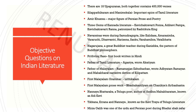नवरतना, Samudragupta के time पर — Gupta period हमारा golden age period माना गया है, और उस समय art and culture का बहुत ज्यादा development हुआ था। उन्होंने अपने nine gems को नवरतना का नाम दिया था, जिसमें Kalidasa, Amara Simha, Varruchi, Dhanvantari, Harisena, Shanku, Varahamihira और Vatsabhatta शामिल थे। ये अपने-अपने field में famous थे — कोई astrologer था, कोई magician था, कोई physician था — they were well known in their own fields.